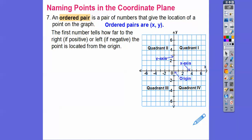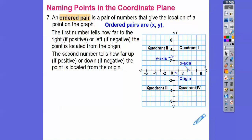The first number, which is X, tells us how far we go to the right if it's positive. If the first number is negative, we'd go to the left. The second number tells us how much we go up or down — if it's positive, we go up; if it's negative, we go down.